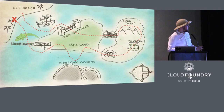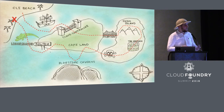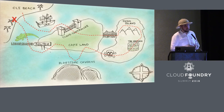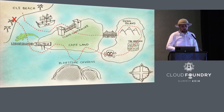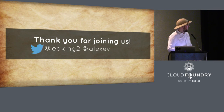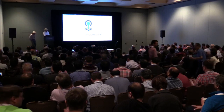That concludes our journey. We've touched on UAA and Cloud Controller, visited Capiland, crossed the CC bridge, looked at the staging and running processes in Cloud Foundry, had a walk through the garden, and came back out looking at the router and Loggregator. Thanks for joining us.